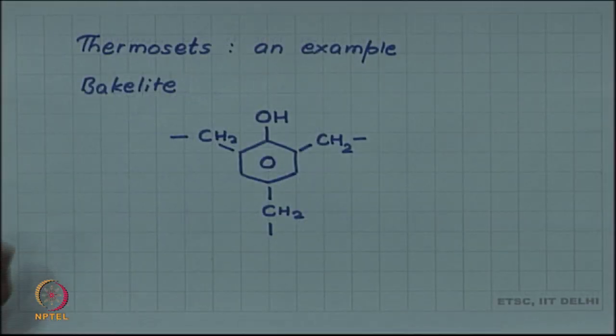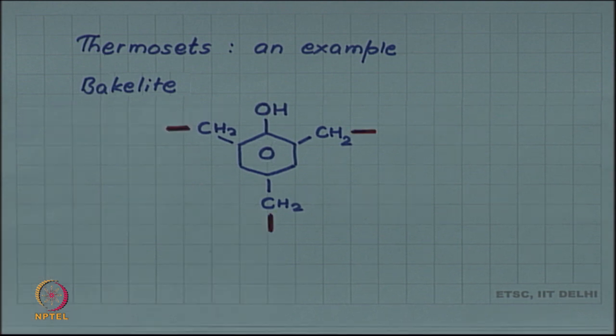A really interesting example of a thermoset is bakelite. You can see in the bakelite monomer which is shown here this is the aromatic or benzene ring. Three of the hydrogens are substituted by CH2 group and one hydrogen is substituted by the OH group. These CH2 groups then have one free bond to connect with other monomers. But since each monomer, unlike polyethylene where each monomer had only two free bonds, here each monomer has three free bonds.